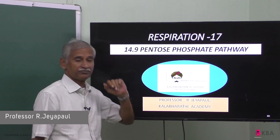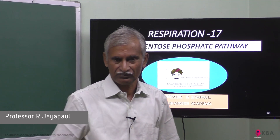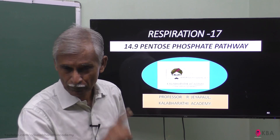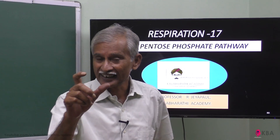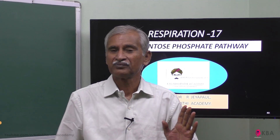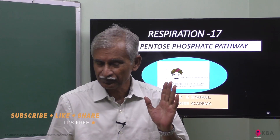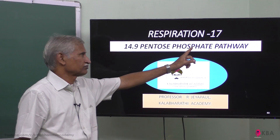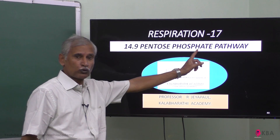Pentose is a 5-carbon sugar ribose. It is present in DNA and RNA. The pentose sugar is also phosphorylated — a phosphate group is added.